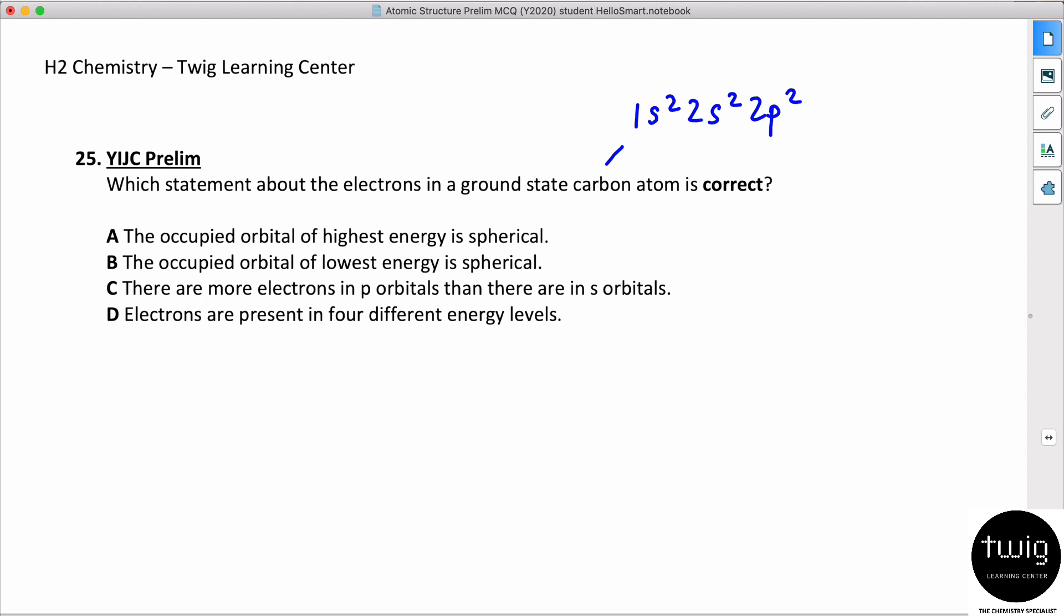The occupied orbital of highest energy is spherical? No, it's actually dumbbell shape, so that's wrong. The occupied orbital of lowest energy is spherical, which is true. This is s, s is spherical, so this is correct.